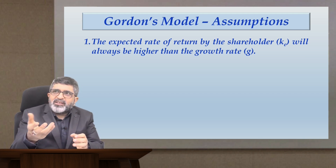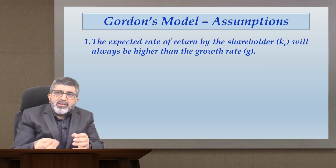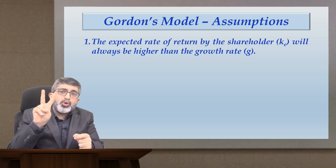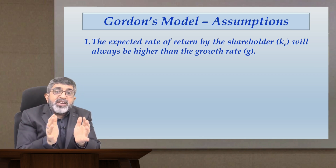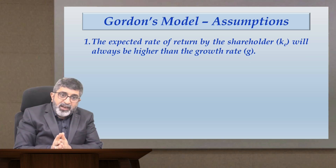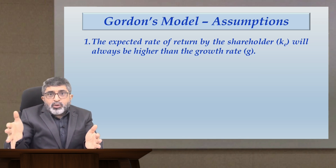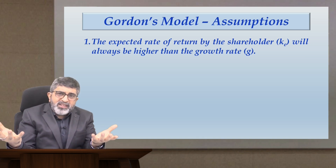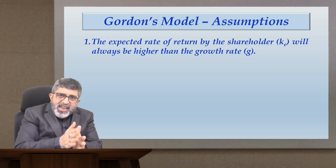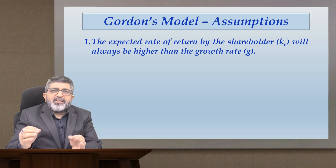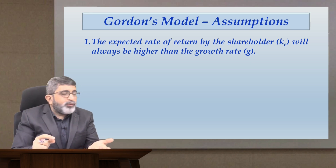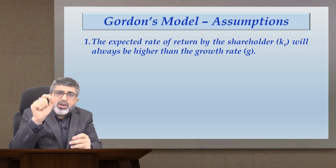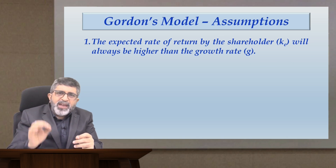One of the assumptions is that the expected rate of return by the equity shareholder is always going to be greater than the growth rate. This is not just theoretical. In reality, an equity investor aspires for two components: one is the dividend yield and one is the growth in those dividends. Dividend yield rate and growth rate taken together become the required rate of return by the equity investor. So obviously ke has to be greater than the growth rate — the model cannot work otherwise, and in real life this assumption cannot be challenged.